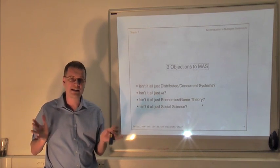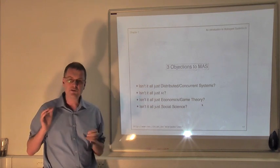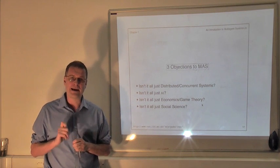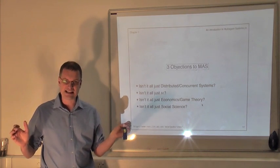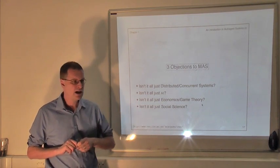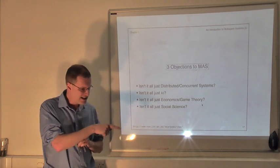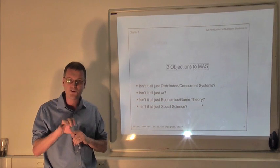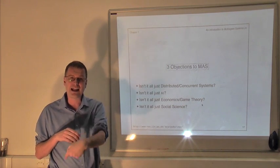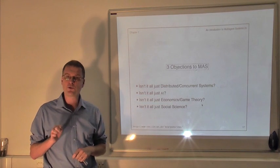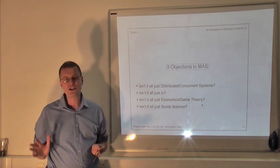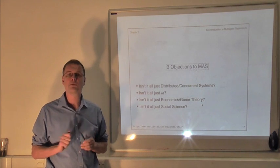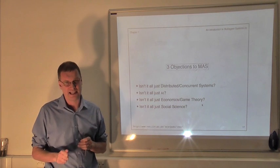If you want to understand why so many of the things happen on eBay that do happen, you have to understand those strategic considerations. A classic behaviour on eBay is what's called sniping. If you've ever done an eBay auction — say it's over a week, you're auctioning a secondhand laptop — nothing happens for most of the week, and then at the last minute possible there's a flurry of activity where people try to submit the last bid possible. That behaviour is called sniping. A distributed systems analysis of eBay is not going to predict that behaviour.